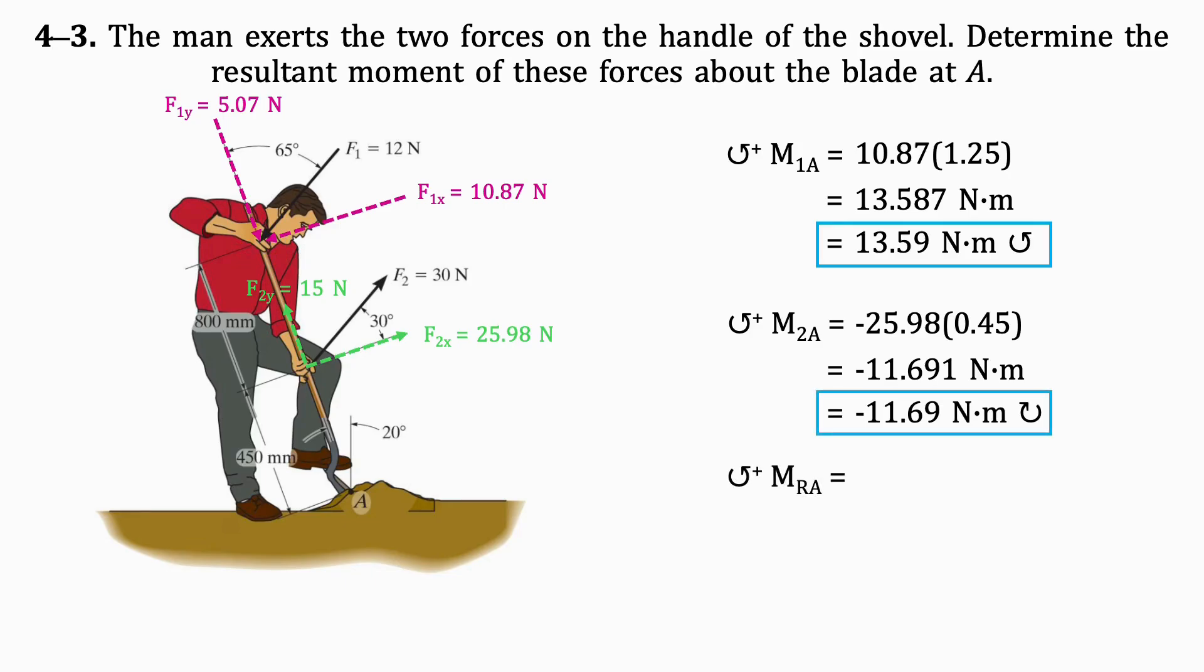Finally, to get the resultant moment, we just add the two moments together. By doing so, we get 1.9 newton metres in the counterclockwise direction. And there you have it. Quick statics answers.